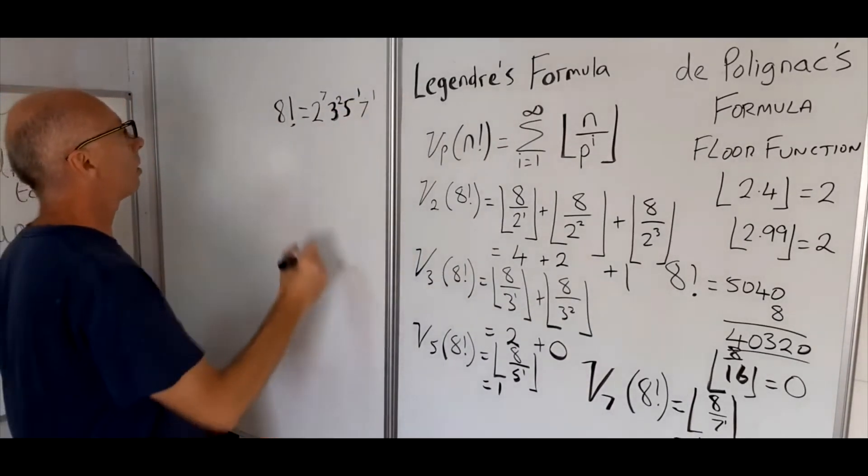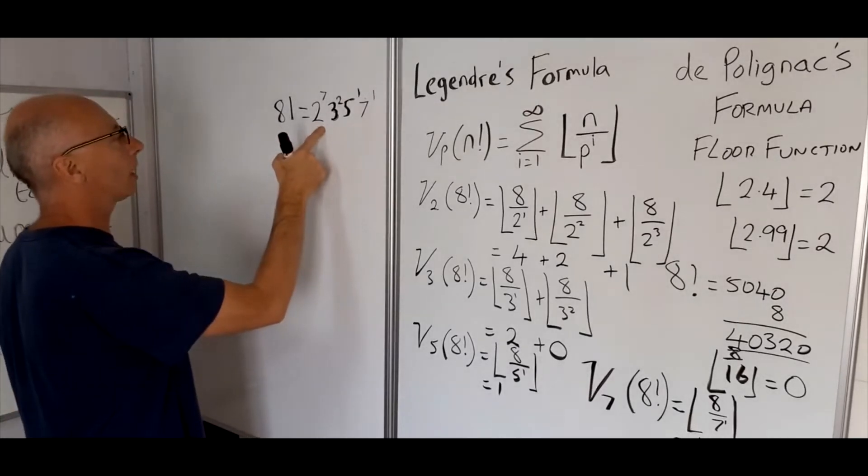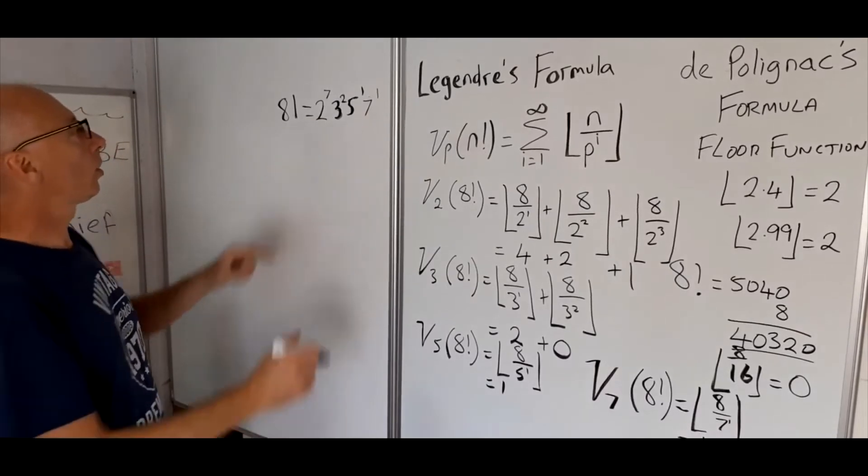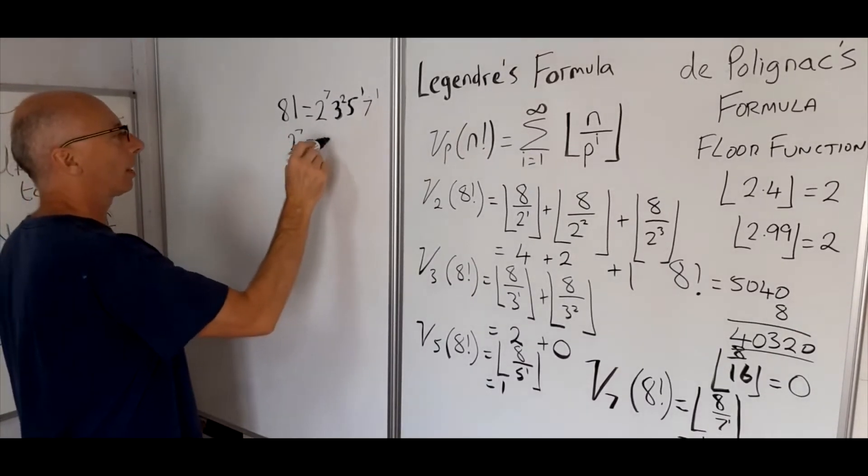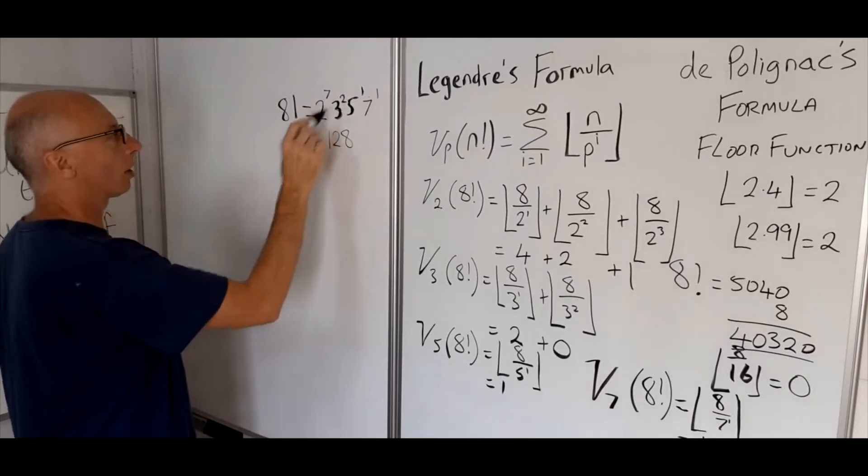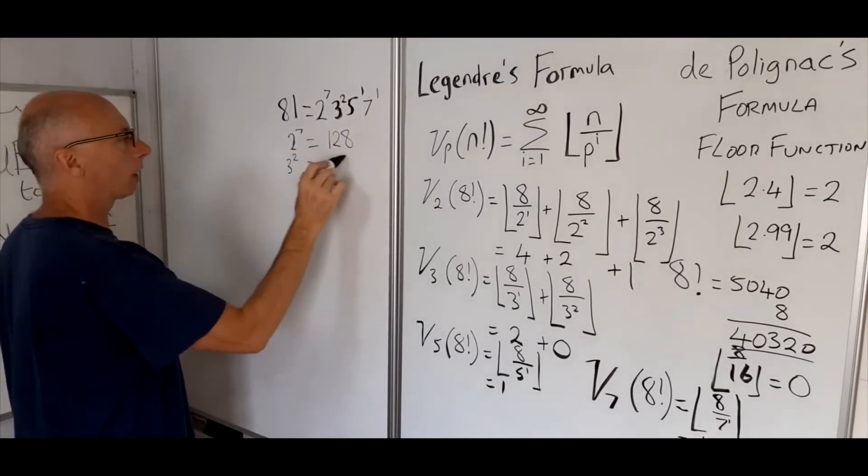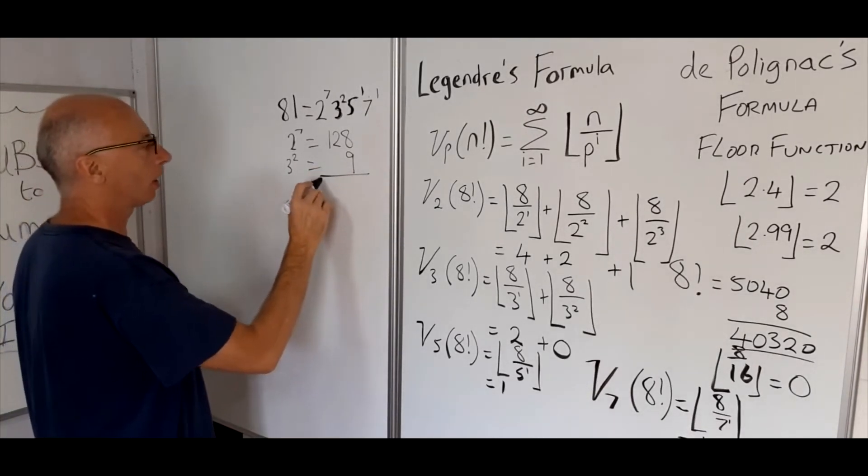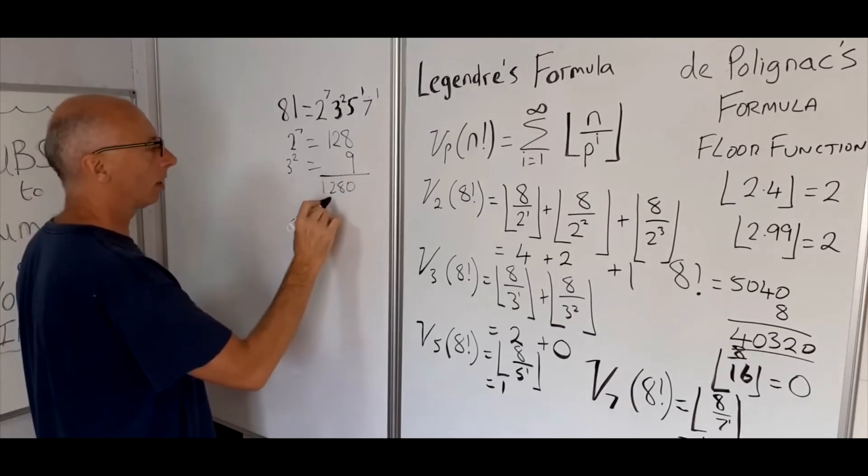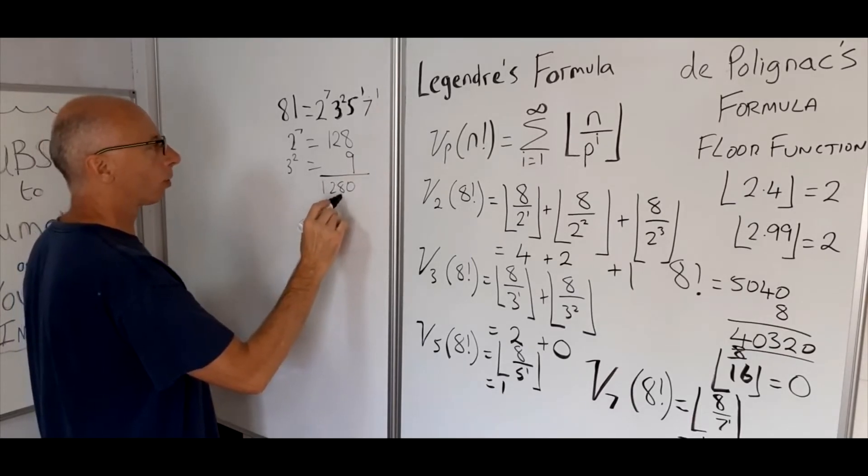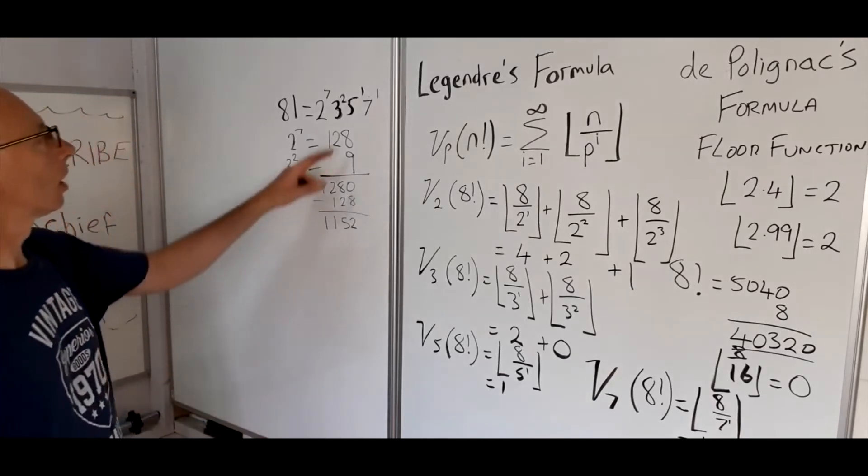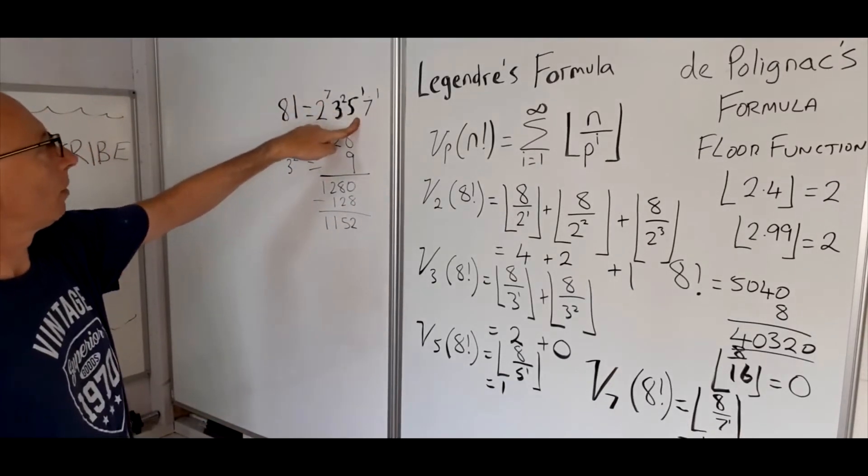So let's just check this out. 2 to the power of 7 is 128. So if we just check this total here, 2 to the power of 7 equals 128. 3 to the power of 2 equals 9. Multiply those off together. That's going to be 1280 minus 128. So that's going to give us 1,152 times this by 5.